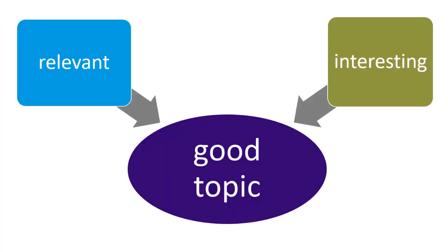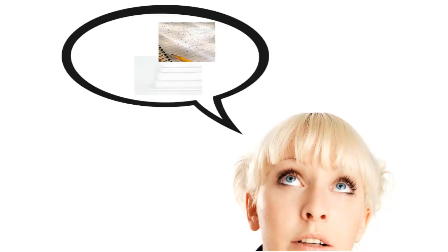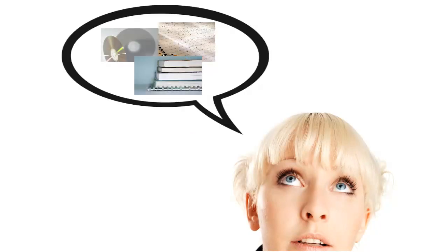You'll need to pick a topic that's interesting to you since you'll be spending a lot of time on it. You'll also need to make sure it's relevant to your course. Read the assignment instructions carefully and ask your instructor if anything isn't clear. The best way to start is to look through your course notes, readings, and other course materials. Pick a few things you thought were interesting and would like to know more about.